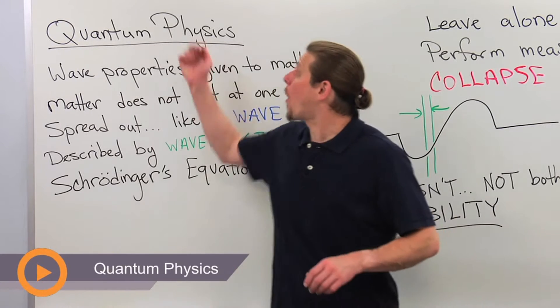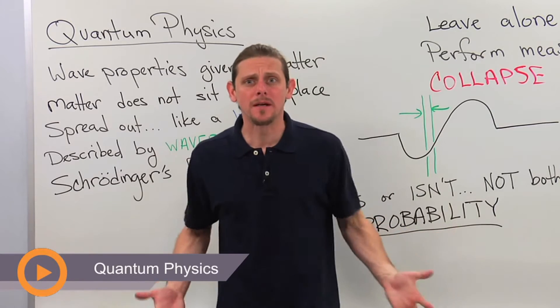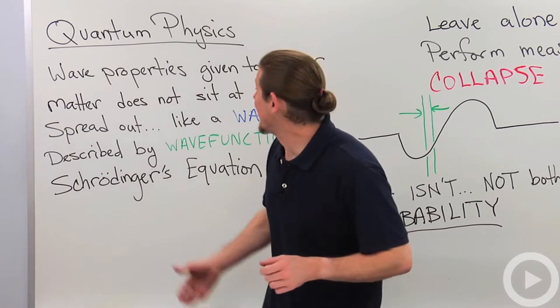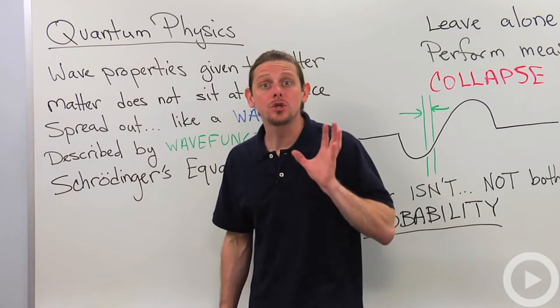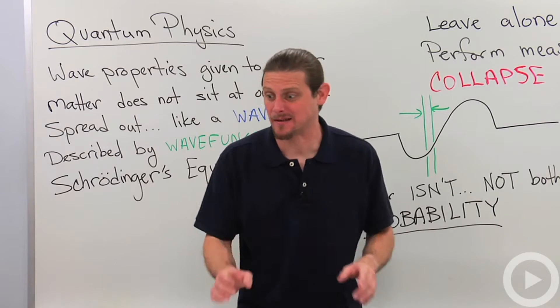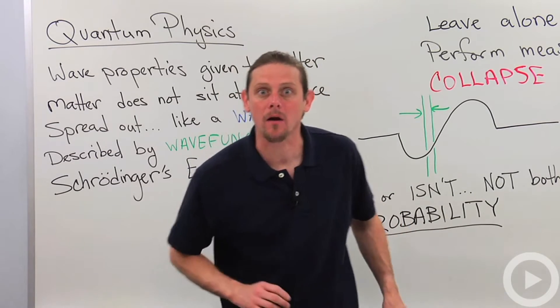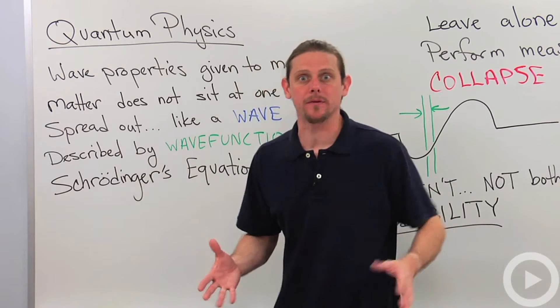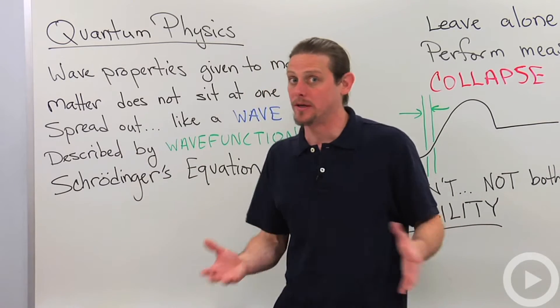All right, so let's talk about quantum physics. What is quantum physics? Quantum physics is what happens to physics when we give wave properties to matter. So matter no longer is allowed to sit in just one place, like an object sitting there. We've got to have it spread out like a wave. And that's why we call it giving wave properties to matter.